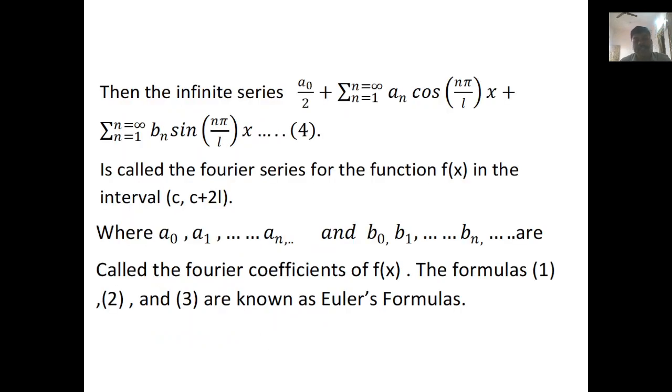Then the infinite series a₀/2 + Σ(n=1 to ∞) aₙcos(nπx/l) + Σ(n=1 to ∞) bₙsin(nπx/l) is called the Fourier series for the function f(x) in the interval (c, c+2l). Here a₀, a₁, ..., aₙ and b₀, b₁, ..., bₙ are Fourier coefficients of f(x). The formulas (1), (2), and (3) are known as Euler's formulas.